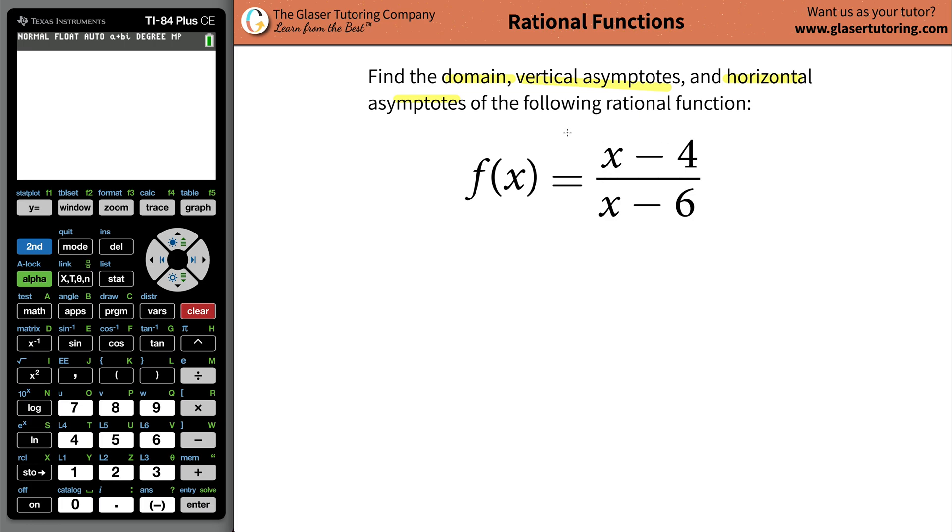So in terms of the numerator, there's no restriction. You can plug any x you want in here. Negative, positive, zero. It doesn't matter, and you can subtract 4 from that. It'd be different if there was a square root - you cannot plug in negative values. So if this was like square rooted, then your domain would be restricted. However, right now we're all good with this in terms of the numerator.